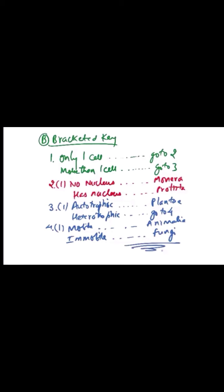For the 'more than one cell' option, you write 'then go to three'. In bracket three, if the organism is autotrophic, it is Plantae. If it is heterotrophic, then go to four. In bracket four, check if it is mobile — can it move from one place to another?